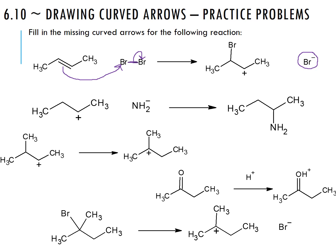In the second problem we have a carbocation and a negatively charged nitrogen — a good nucleophile and a good electrophile — and we can see that a bond has formed between that nitrogen and that carbon. Drawing in the lone pair on nitrogen and going from the lone pair to that carbon, this falls under the nucleophilic attack category.